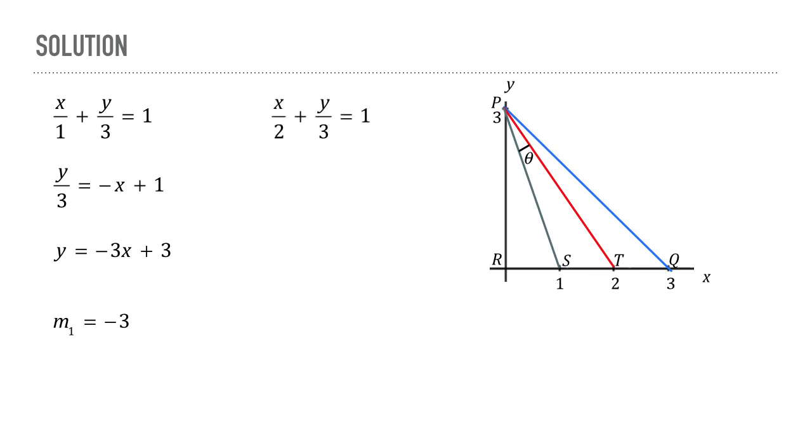Similarly, the equation of the line PT can be written down in the intercept form which can be transformed to this and therefore the equation can be written down in the slope intercept form. The slope of the line PT is minus 3 by 2.